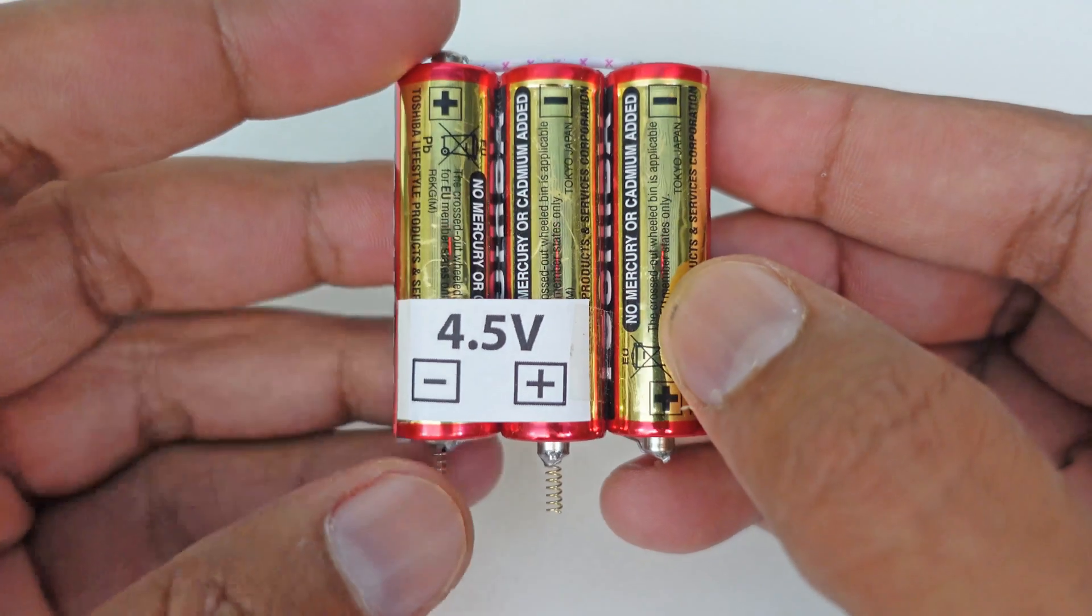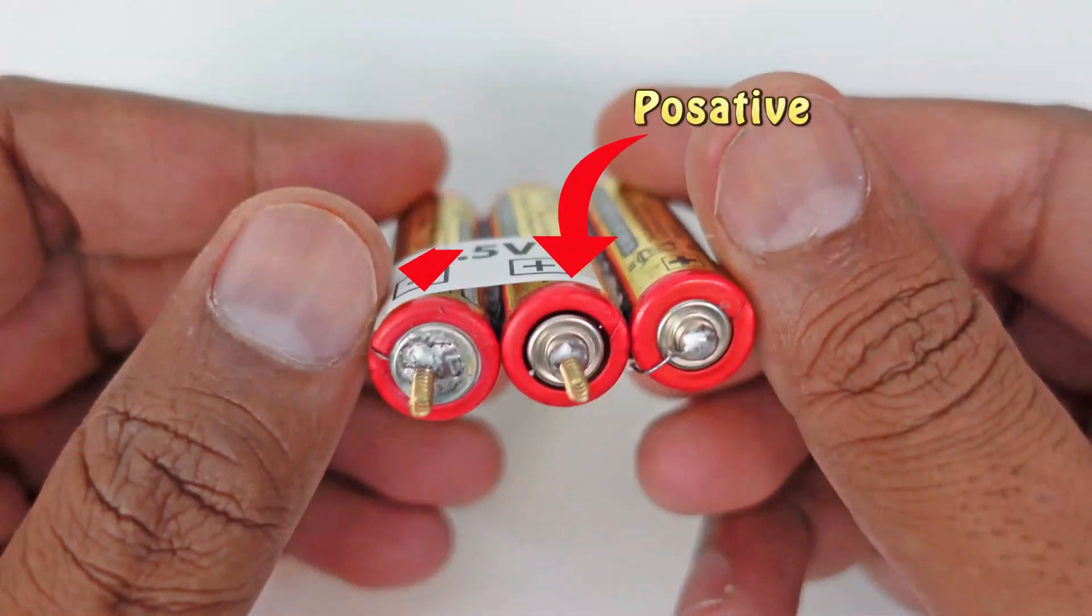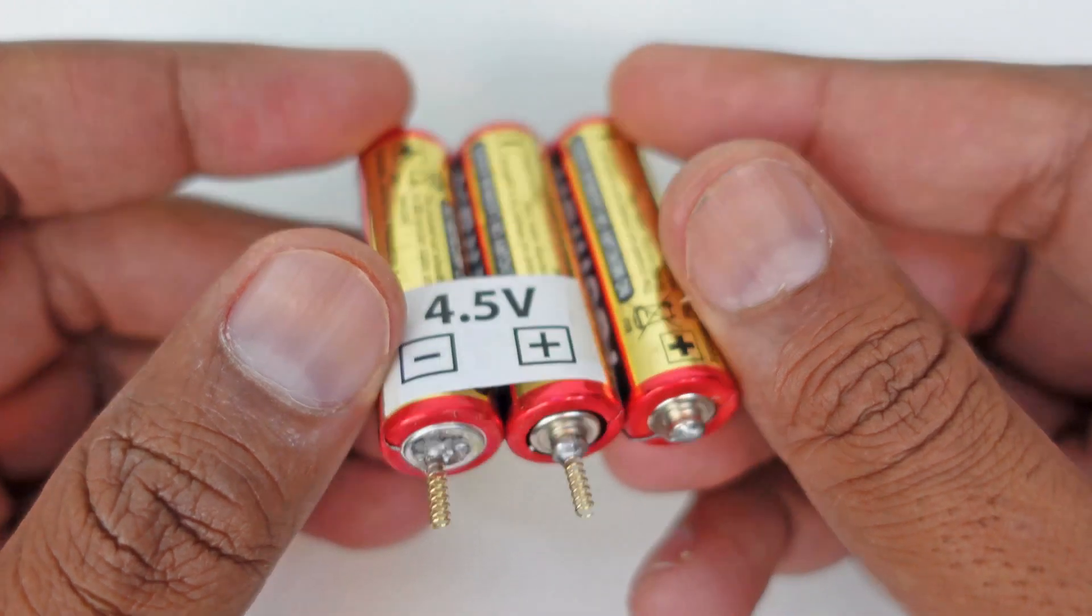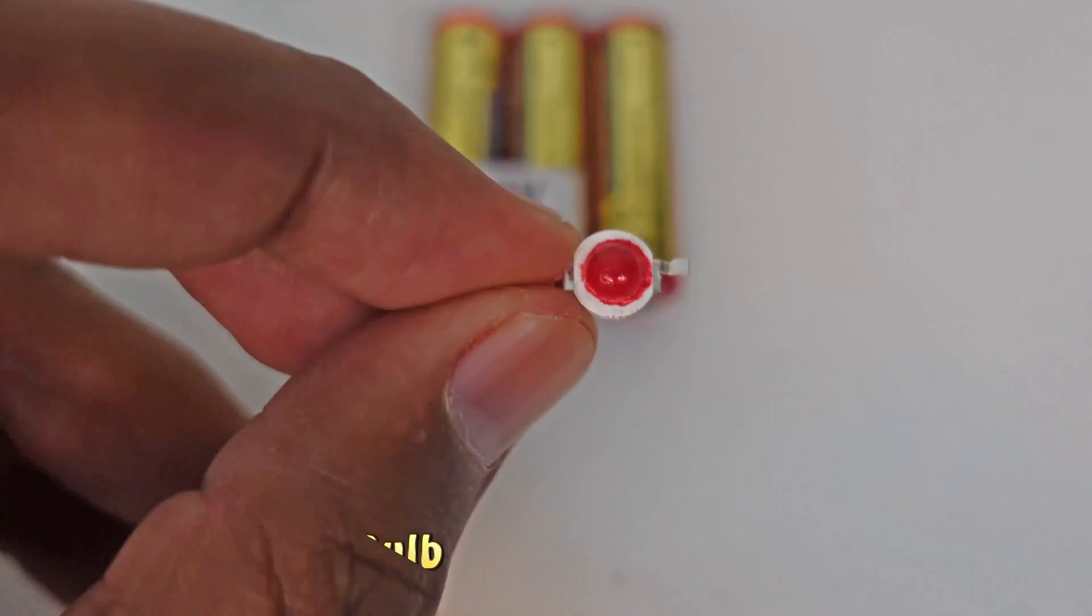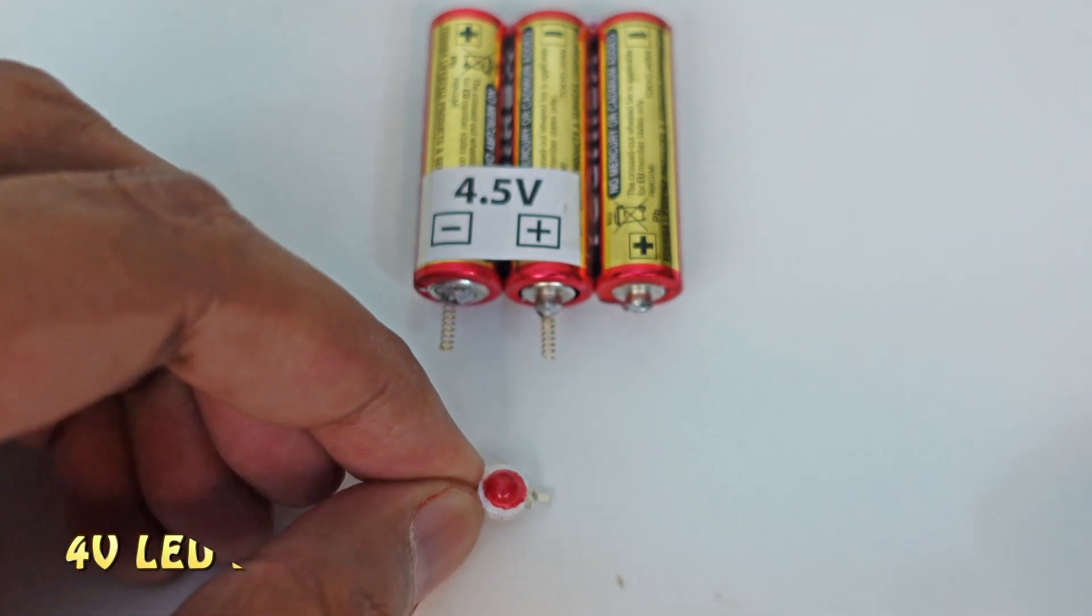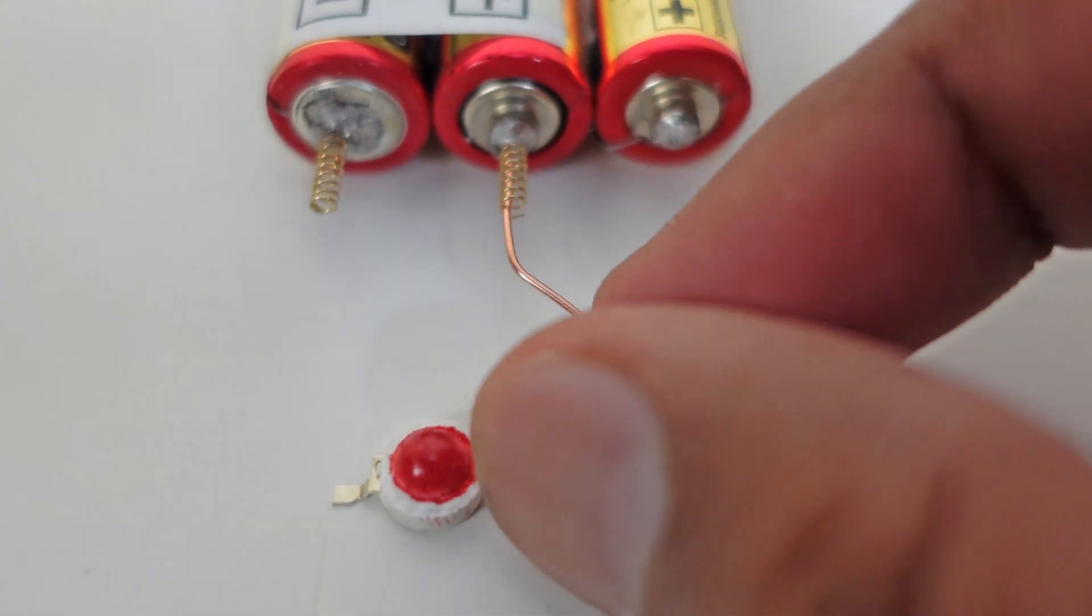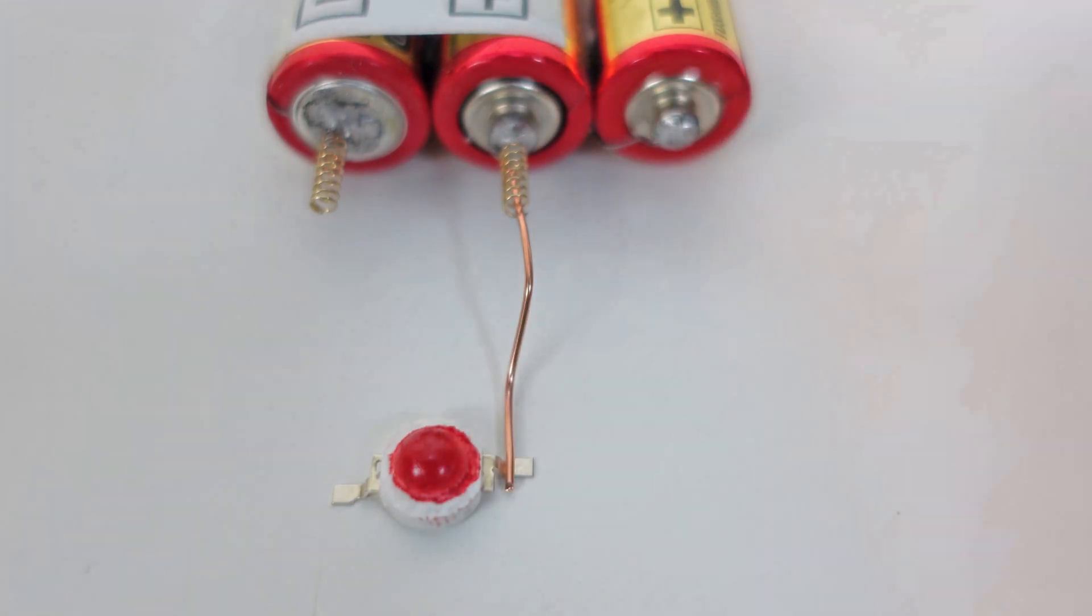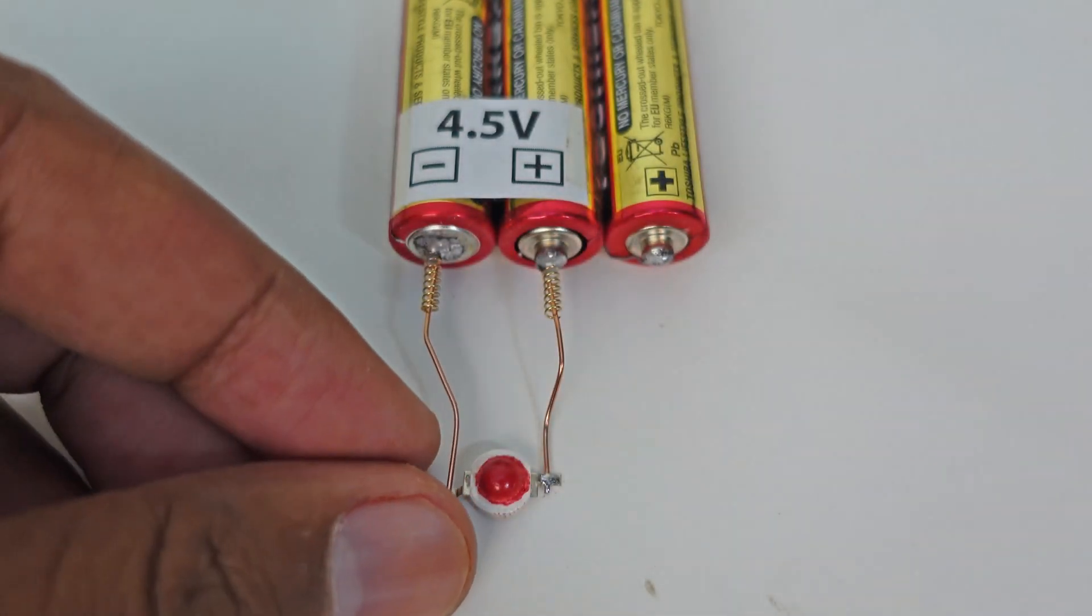As you can see we have three battery cells in series which have total 4.5 volts and positive and negative connections are coming out of it. We keep these battery cells in front of us. This is a LED light. We place this light right in front of these battery cells. Now we connect the wire from the positive of the battery to the positive of the LED light and connect the wire from the negative of the battery to the negative of the LED.